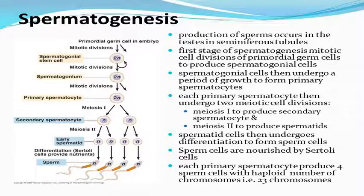Now let me show you the steps involved in spermatogenesis. The very first step involves primordial germ cells in the embryo. These primordial germ cells will contain several spermatogonia, and there will be several spermatogonia present in them.